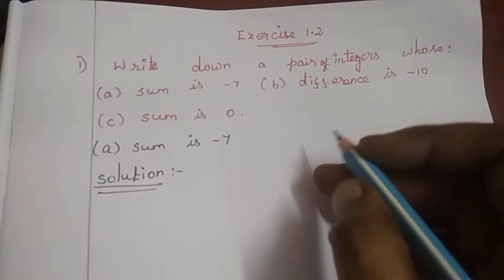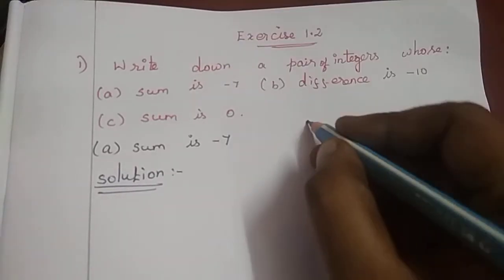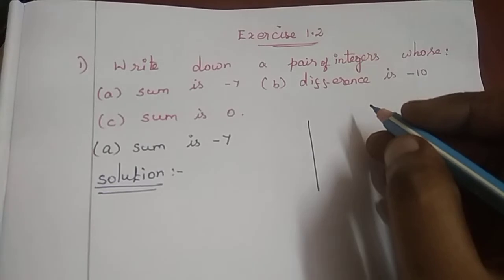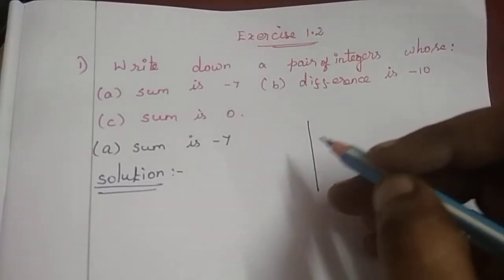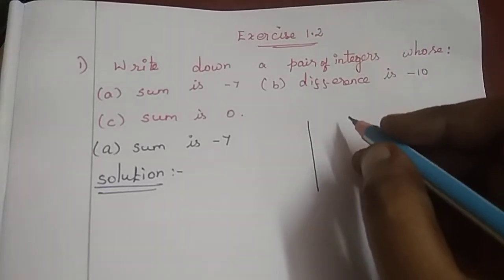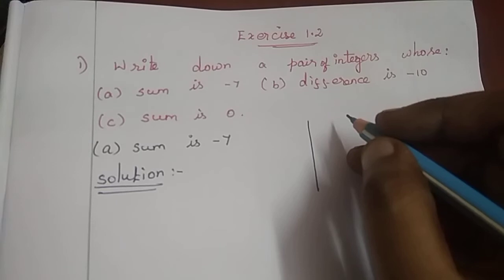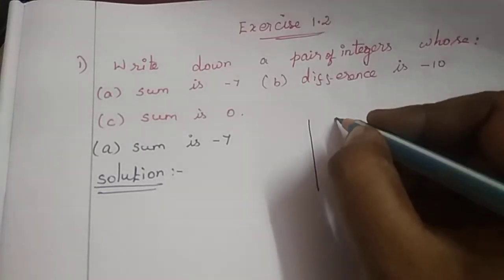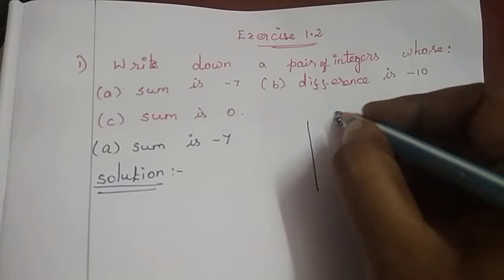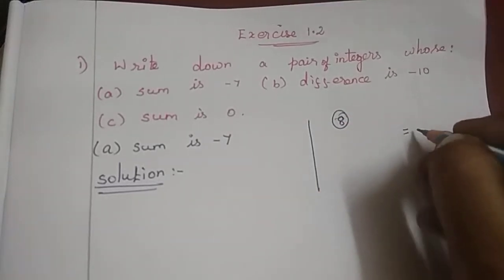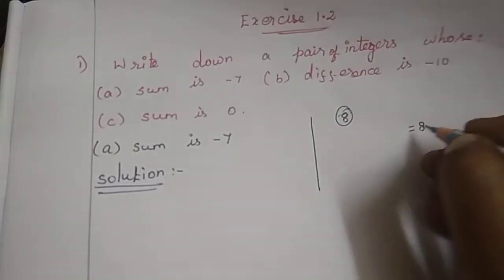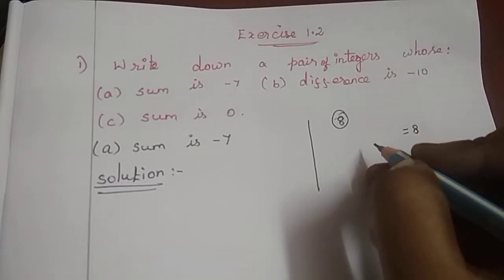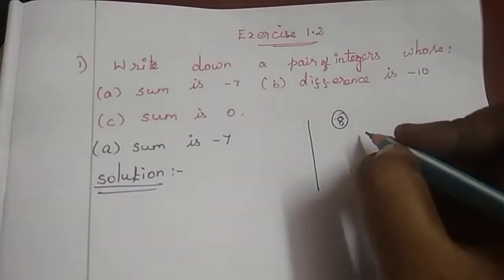Sum means addition. So the sum of 2 numbers — we need 2 numbers that add to minus 7. Let's look at the number pairs.